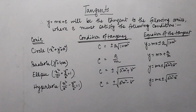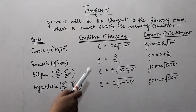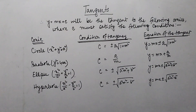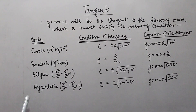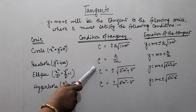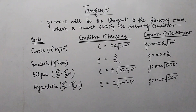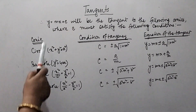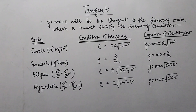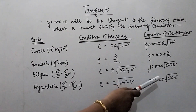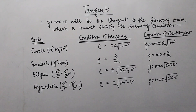Let's check these conditions for different conics. If we consider a circle with equation x² + y² = a², then this straight line will be a tangent only when c = ±a√(1 + m²), and hence the equation of the tangent will be y = mx ± a√(1 + m²). Similarly, considering a parabola y² = 4ax, the straight line will be a tangent only when c = a/m, so the equation of the tangent is y = mx + a/m.